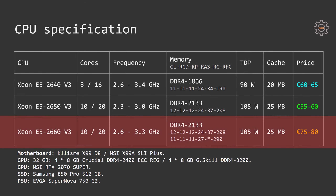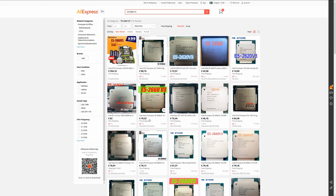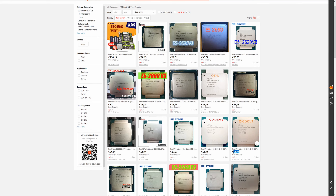Xeon E5 2660v3, the focus of today's video, also has 10 cores and 20 threads, but its frequency is 300 MHz higher at 2.6 to 3.3 GHz. Unfortunately the TDP limit is also 105 watts, and CPU cache also has no changes at 25 megabytes. Still, the price is significantly higher — on AliExpress it's available for 75 to 80 euros.